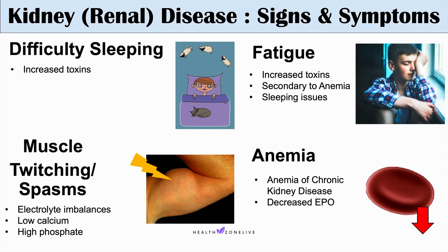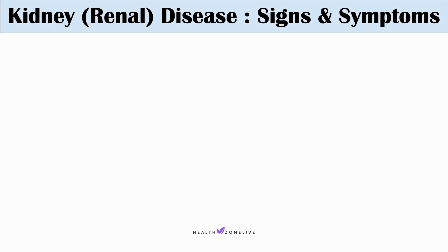One sign is uremic pericarditis — uremia can lead to pericarditis, an inflammation of the pericardium. Uremia, along with some other metabolic toxins, can cause inflammation of the layers of the pericardium. Patients can experience chest pain, often positional and pleuritic.